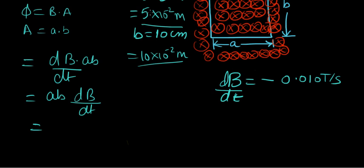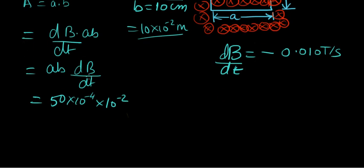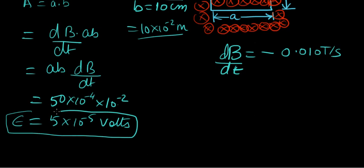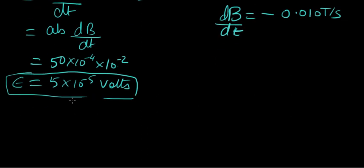Substituting the values: A·B is 5×10 = 50×10⁻⁴, and dB/dt gives 10⁻², so that's 50×10⁻⁶, which can be written as 5×10⁻⁵ volts. So that is the value of the induced EMF — that's the first part done.